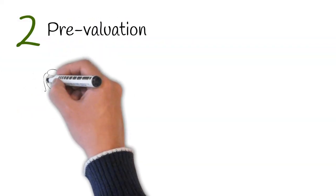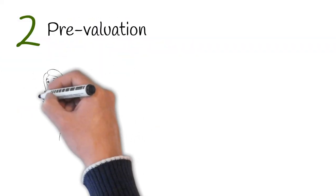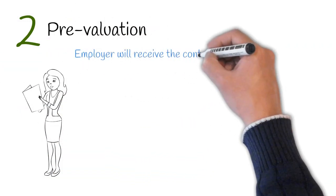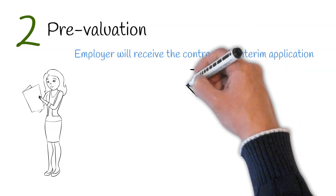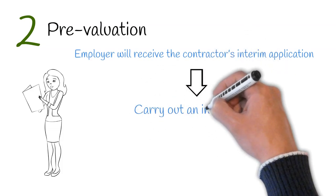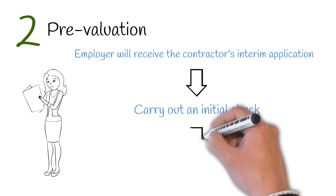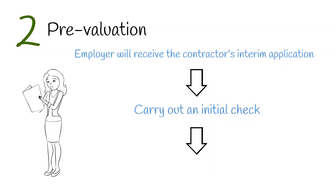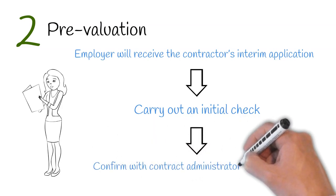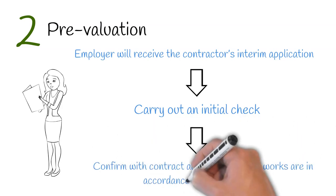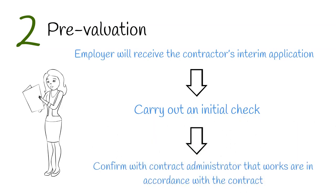Stage 2: Pre-Valuation. This is where the employer will receive the contractor's interim application and carry out an initial desk check on the application provided. The employer's quantity surveyor will need to obtain confirmation from the contract administrator that all works are in accordance with the contract.